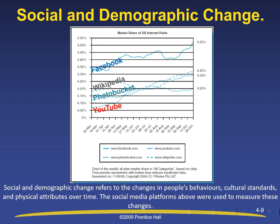The social media platforms used are Facebook, Wikipedia, PhotoBucket, and YouTube. Facebook maintained its upward progression from 4th of March to 28th of October. Wikipedia was second and finished in second position. PhotoBucket was third but finished last. YouTube was last initially but ended up in third position by 28th of October. The changes between Wikipedia, PhotoBucket, and YouTube occur right at the middle of the year.